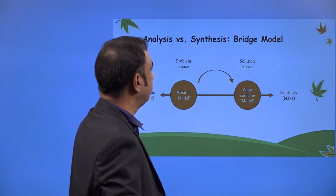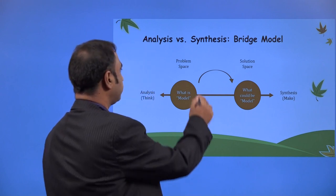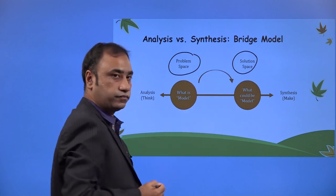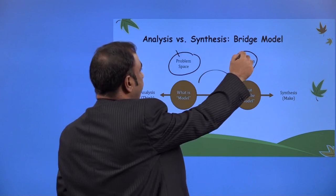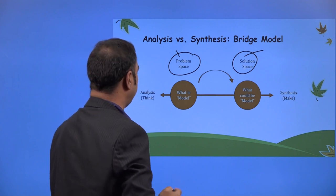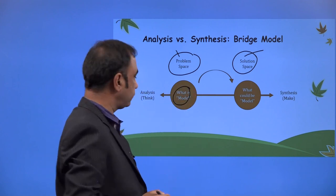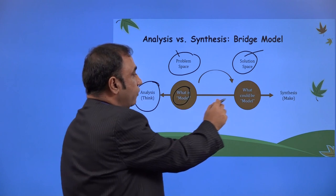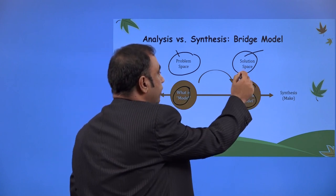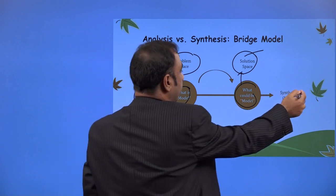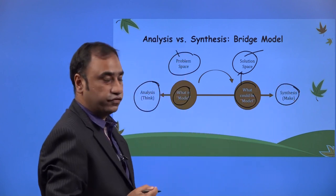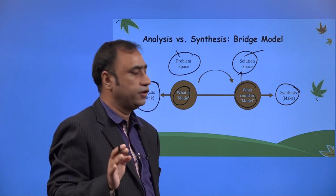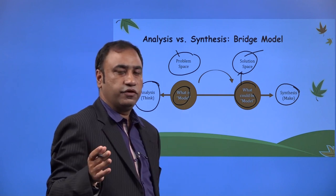Analysis and synthesis use a model called the bridge model. We are in the problem space and we have to move to the solution space. We identify the problems, then identify what the solutions are. We ask: what is my current model, and what could be the model that gives me the particular solution? We compile with synthesis and make that the solution. This is a very simple yet very strong model for moving your product from problem-based to solution-based.